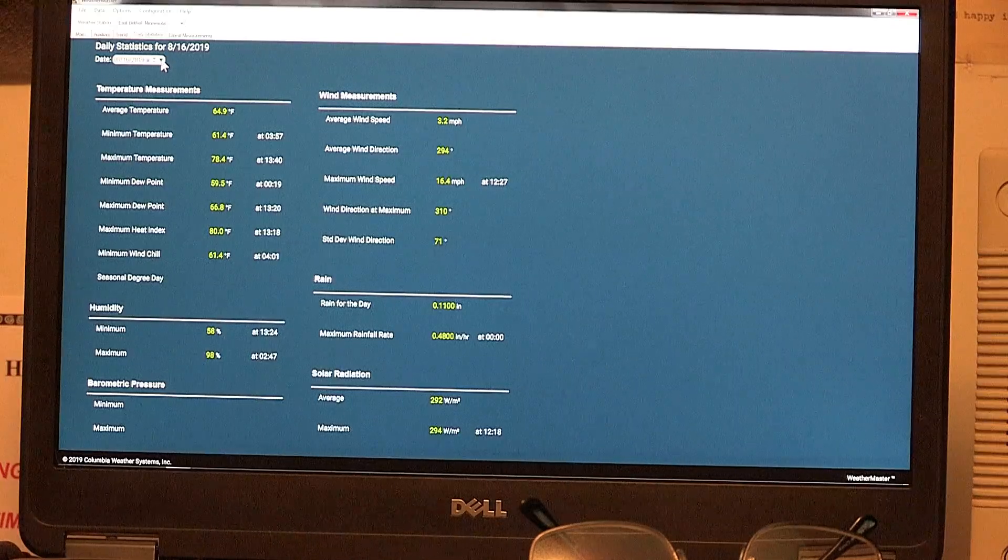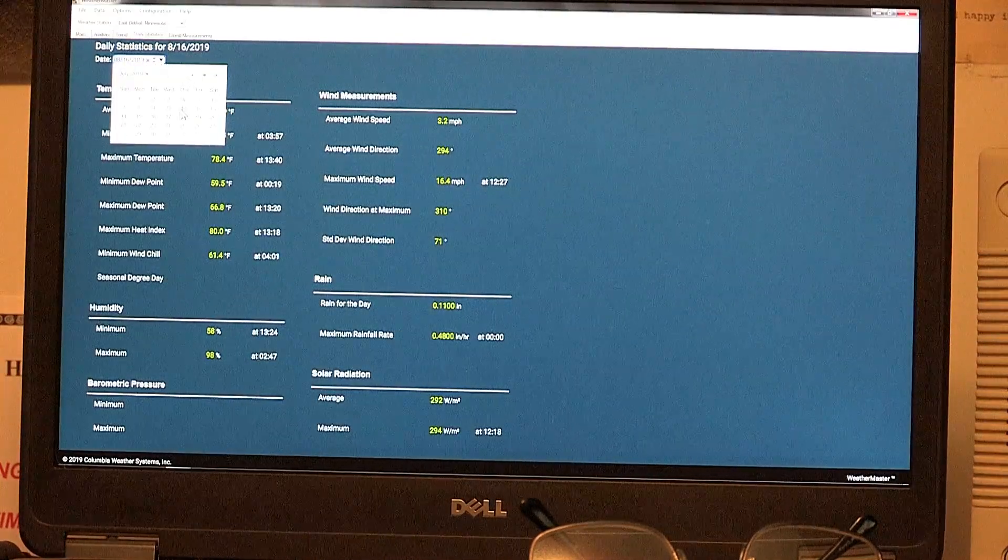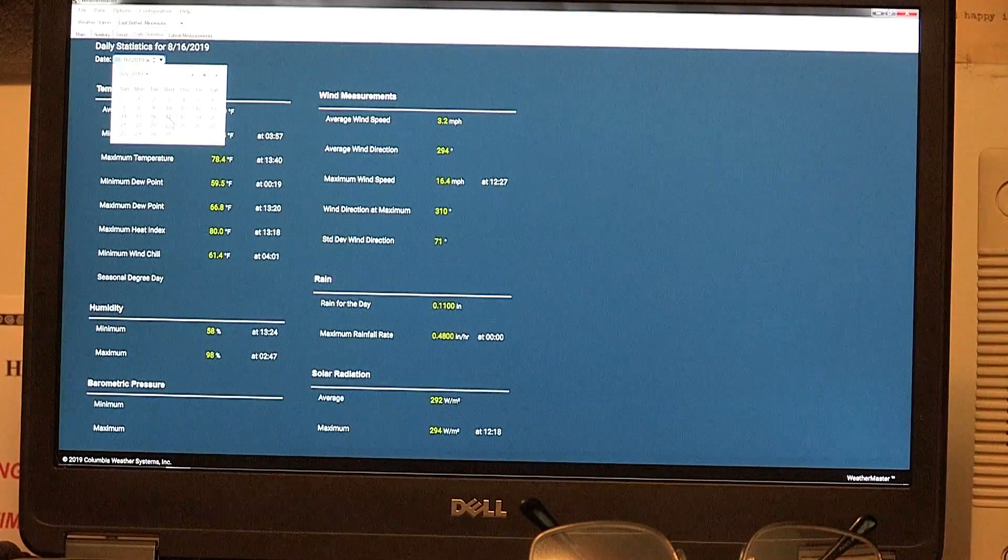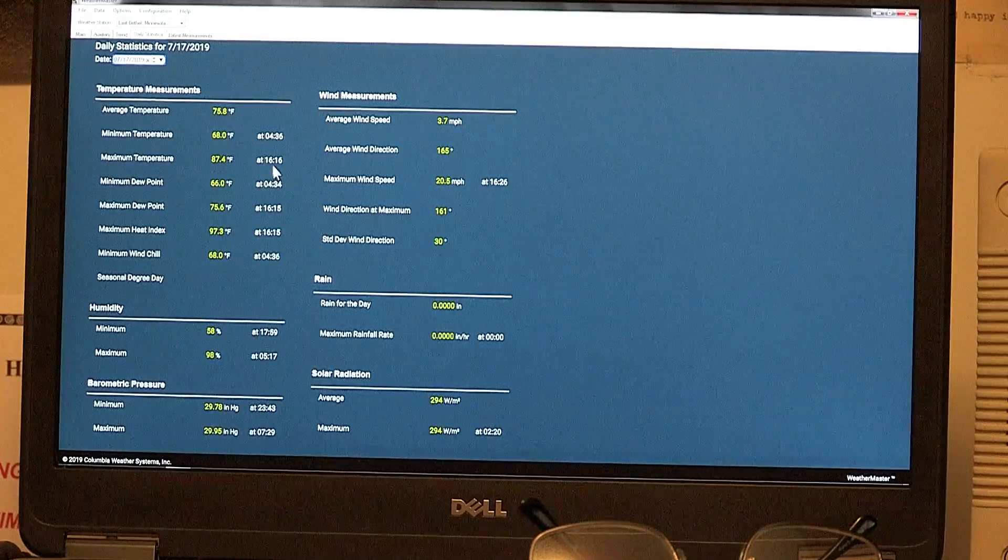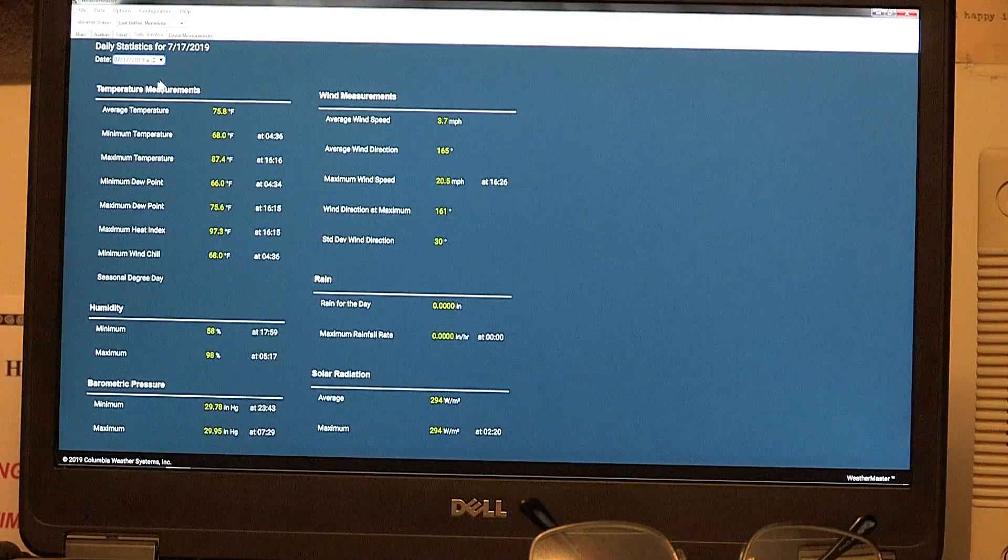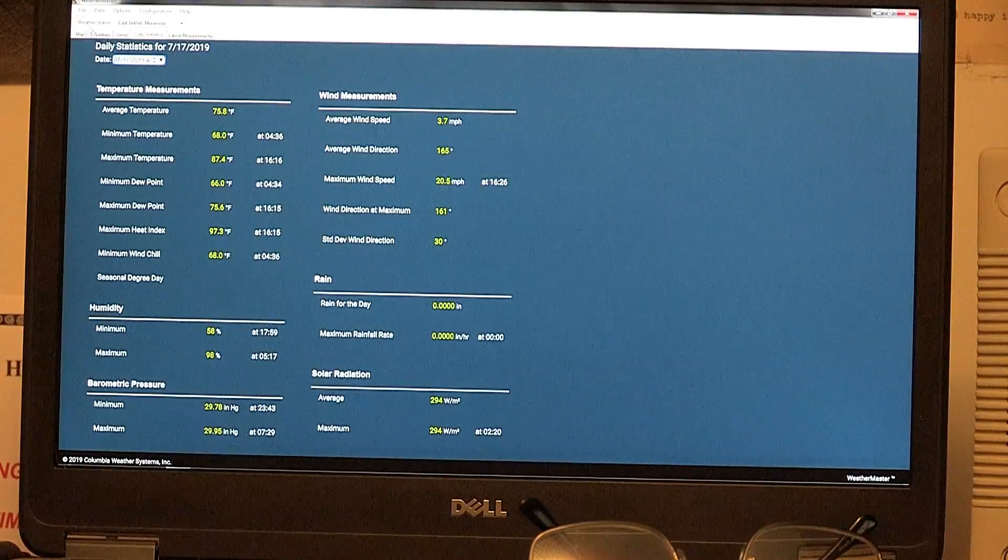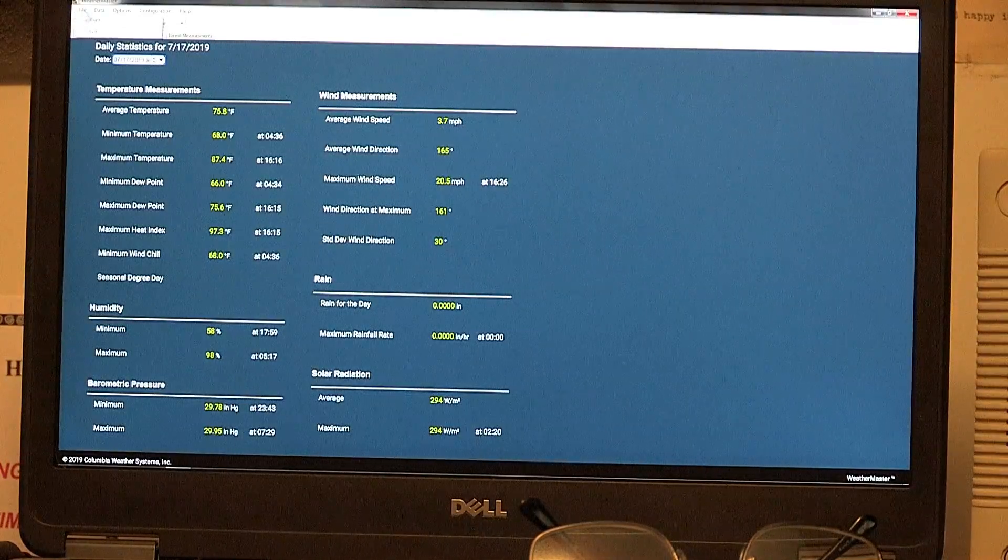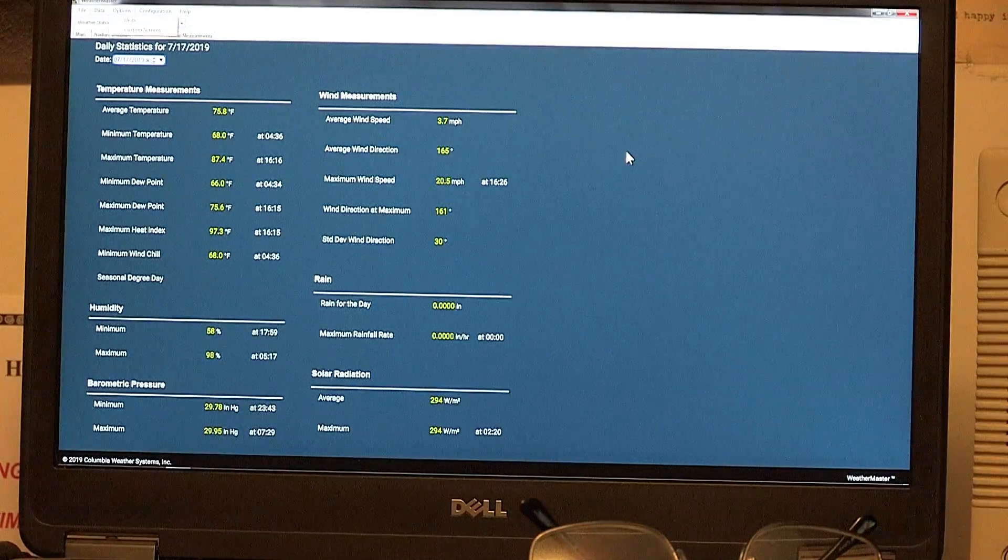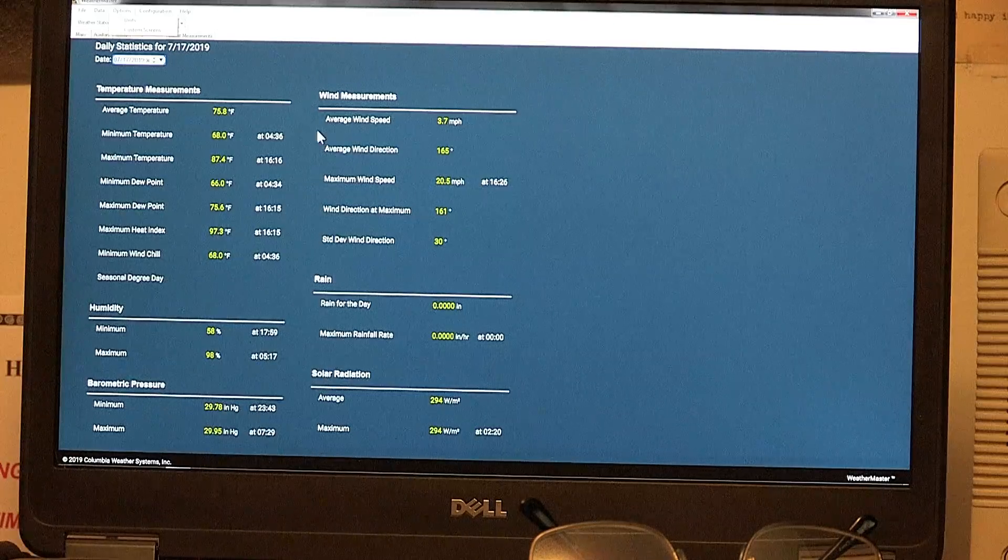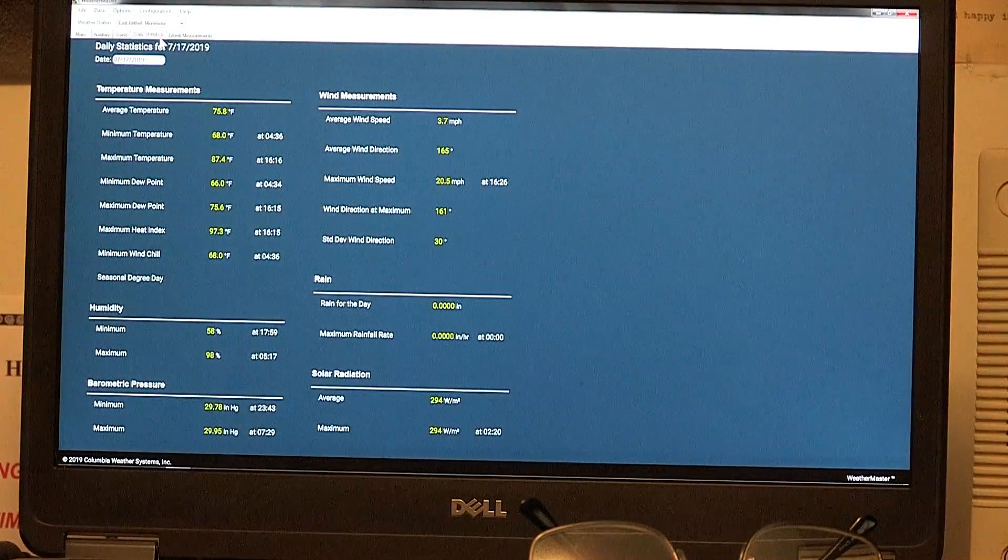And then we have the daily statistics. And you can pick and look at any day since the station has come up. Like, see, here's back in July. And here was the readings for back in July, whatever date. I can't read it from here. And you can also choose to print these daily readings if you have a printer attached to your system.